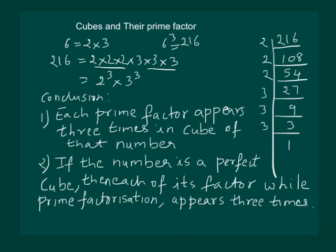That would mean that if we are given a number and we are asked whether it is a perfect cube or not, we will prime factorize that number and see if all the factors appear 3 times, then we will say that the number is a perfect cube, otherwise not.